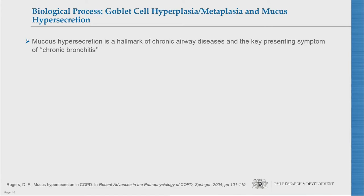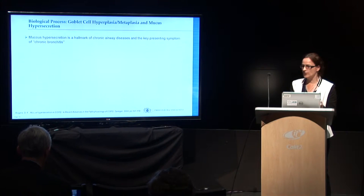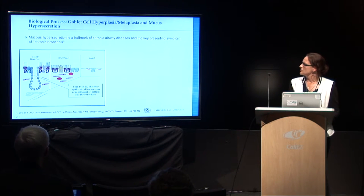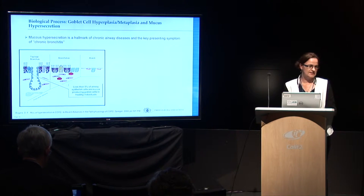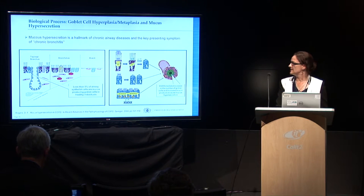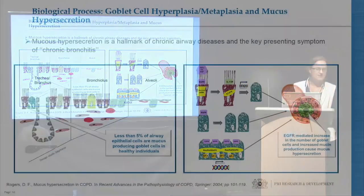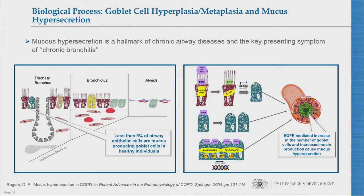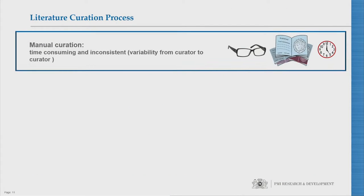For the biological context, I'll talk about a brand new model we recently built. The motivation was to complement an adverse outcome pathway we designed for mucous hypersecretion in chronic bronchitis. Mucous hypersecretion is a key manifestation in chronic airway diseases. In a normal human airway, only 5% of cells are goblet cells — those are the cells that produce mucus. In disease, you can have an increase in goblet cell number and pathways leading to increased mucous hypersecretion, which leads to impaired lung function such as observed in COPD. The first step in model building is going to the literature, collecting articles with causal relationships, because otherwise you can't script in BEL.